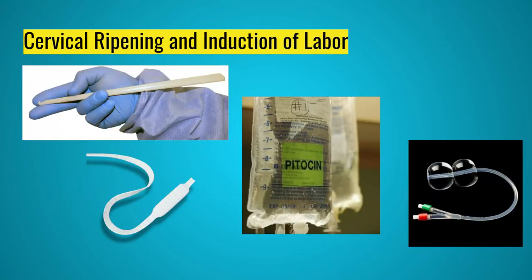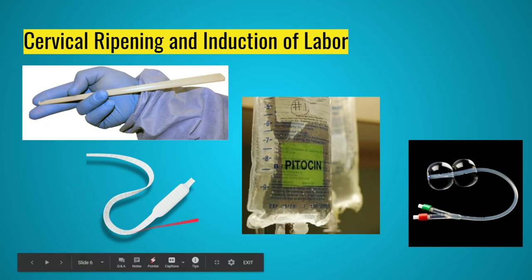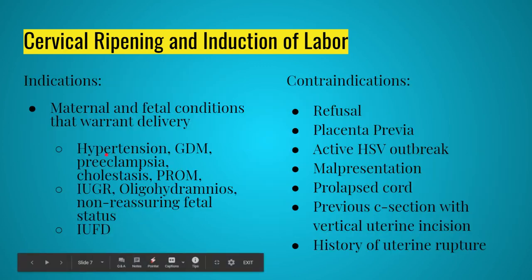Moving on to methods to initiate and promote labor — cervical ripening and induction agents. We use these all the time. The agents include the amnihook, Cervidil, Pitocin, and Cook's balloon — we're going to get familiar with all of them.